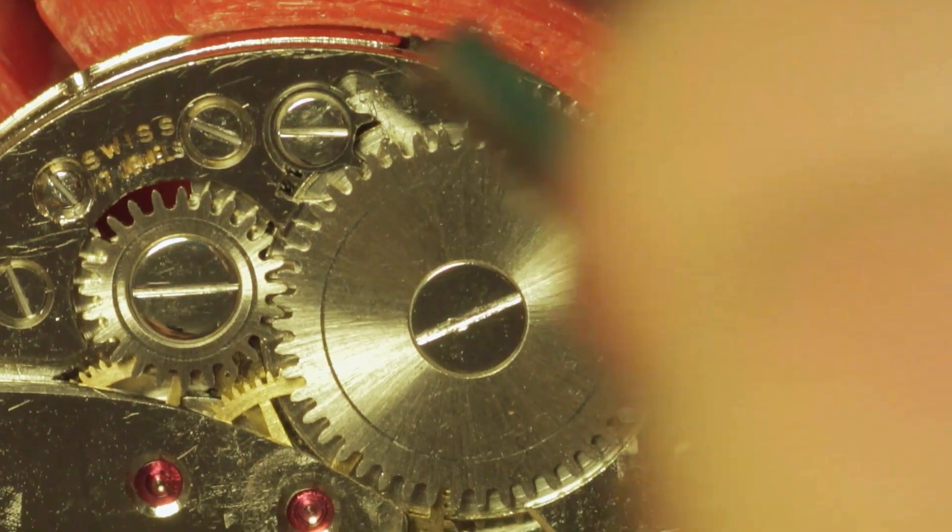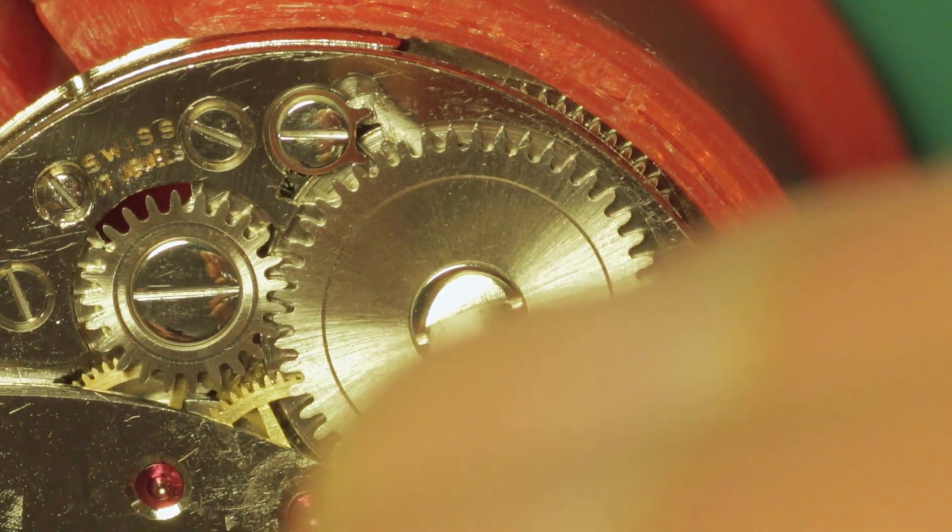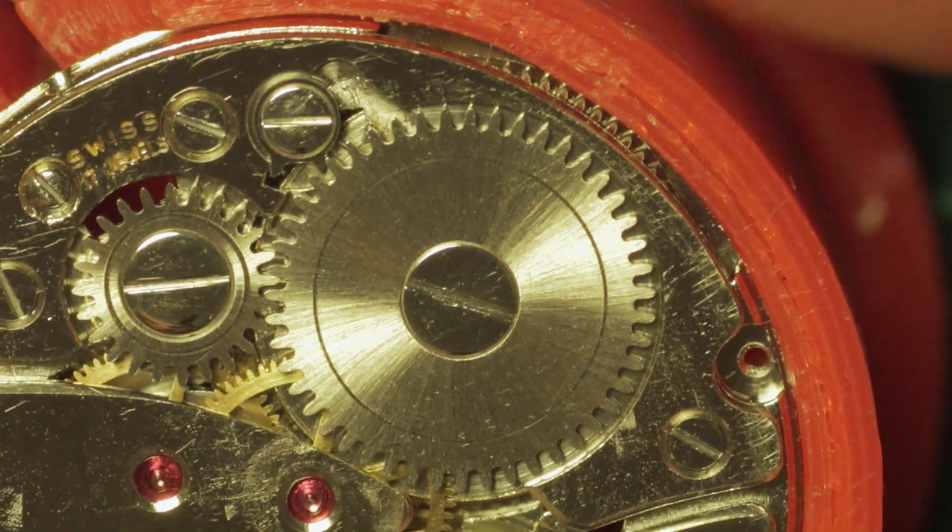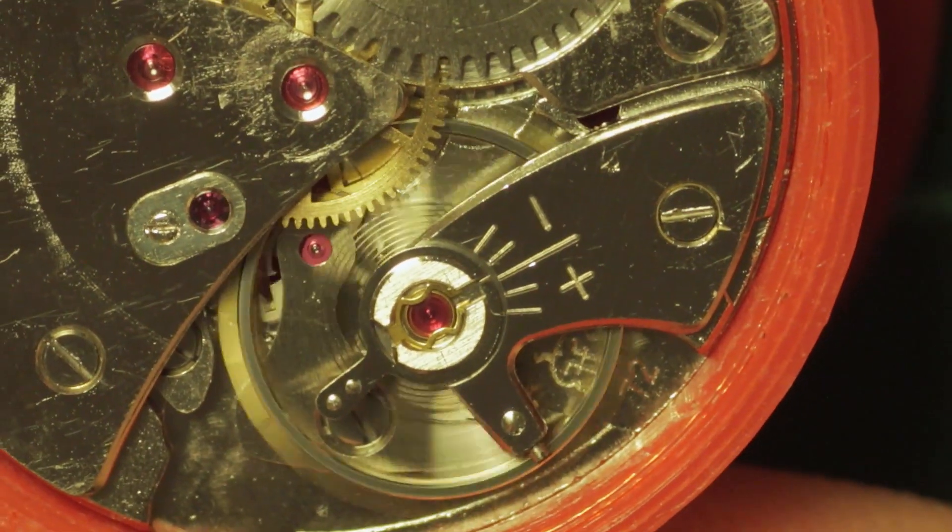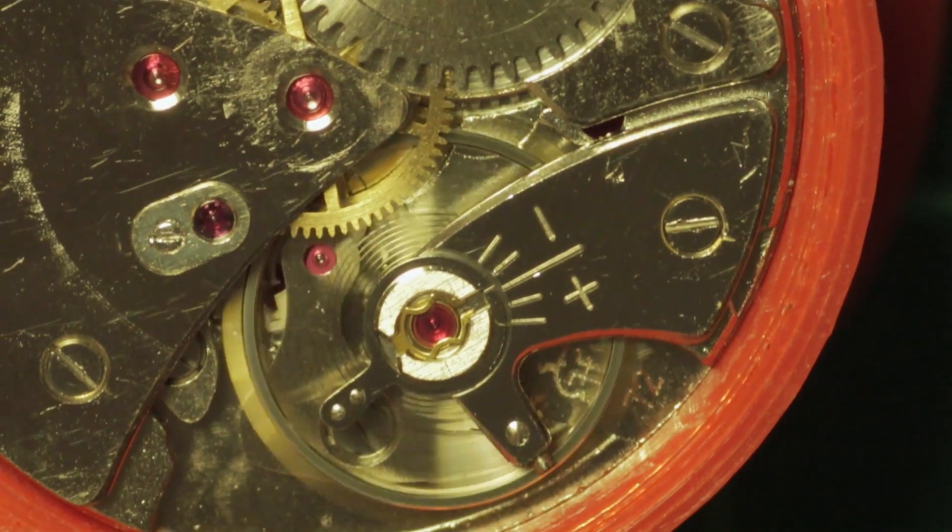What we need to do now is apply a screwdriver, or you can use the winding crown of course if the keyless works are in. I'm going to add one full wind of the ratchet wheel. So that's half and one. So you can see that's one full wind of the ratchet wheel.